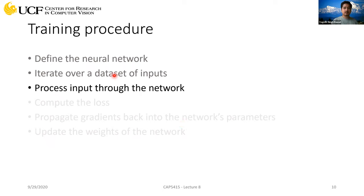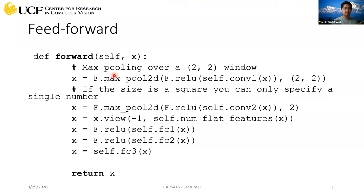Once you have your DataLoader, it allows you to load batches in parallel. Every time you ask for a batch, the DataLoader gives you that batch. You take the batch, pass it to the GPU, and train your network. The batch is sent as the argument X to the forward function defined in your network class, flows through all the layers, and generates an output which is returned to compute the loss function.